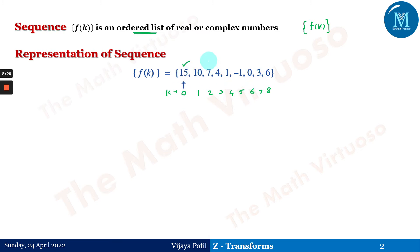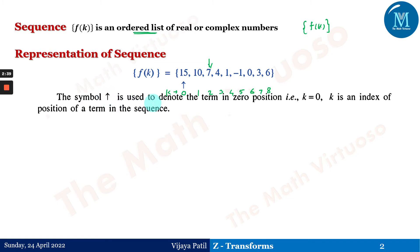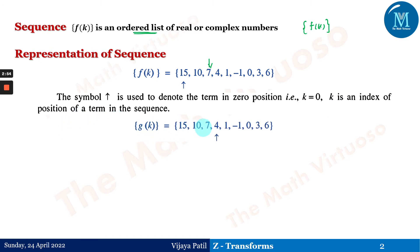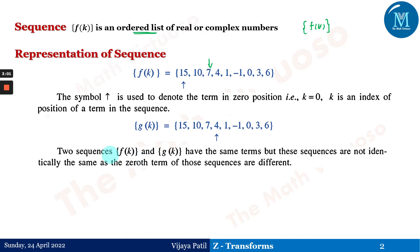This position is denoted by k, and k is an index for this particular sequence. So if you wanted to ask what is the position of 7 in the sequence f(k), it is at the second position, k=2. The upward arrow symbol is used to denote the term at the 0 position, that is k=0; k is the index of the position of the terms in the sequence. Now if g(k) has the same terms 15, 10, 7, etc., but the arrow is below a different element, then f(k) and g(k) have the same terms but are not identical, because the 0th term of those sequences is different.